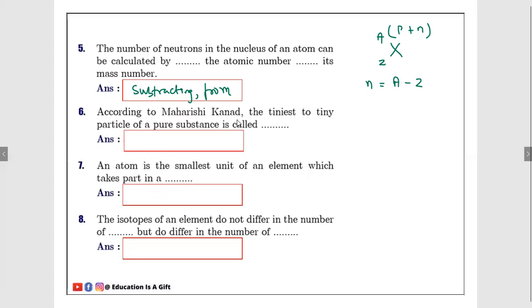Number six: According to Maharshi Karnad, the tiniest to tiny particle of a pure substance is known as... He discussed about anu and paramanu. So you can go with anu. Atoms he referred with anu, paramanu with particles.